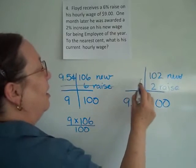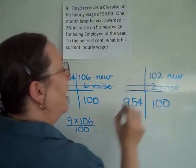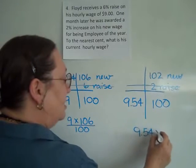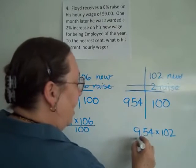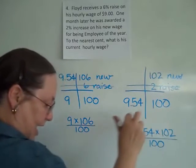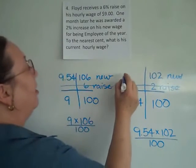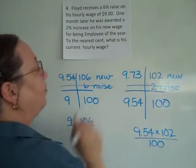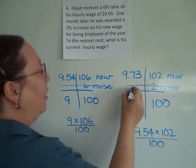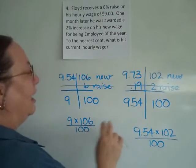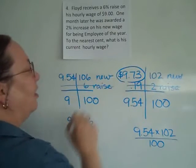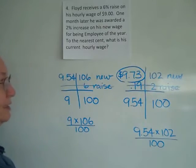I don't need the raise amount — I need the new price. So I'm going to take $9.54 times 102 divided by 100. Remember, you do not have to hit equal at the end of that, and you will get $9.73. If you had found the 2% raise separately, you would have come up with 19 cents, and $9.54 plus $0.19 also gives his new salary of $9.73.